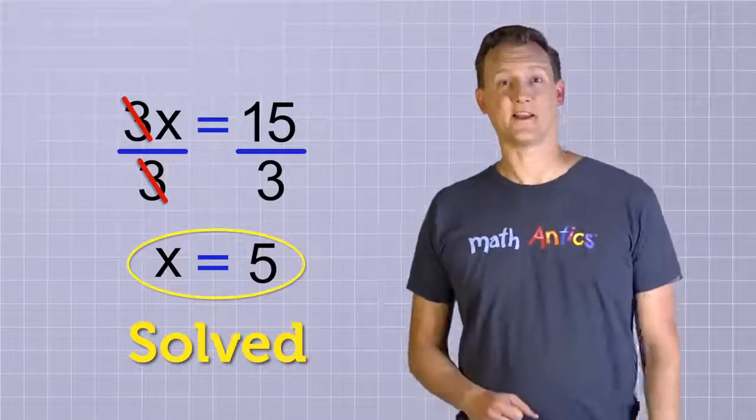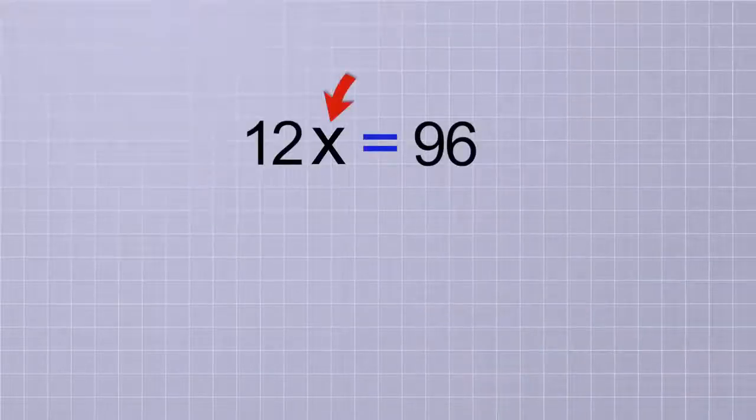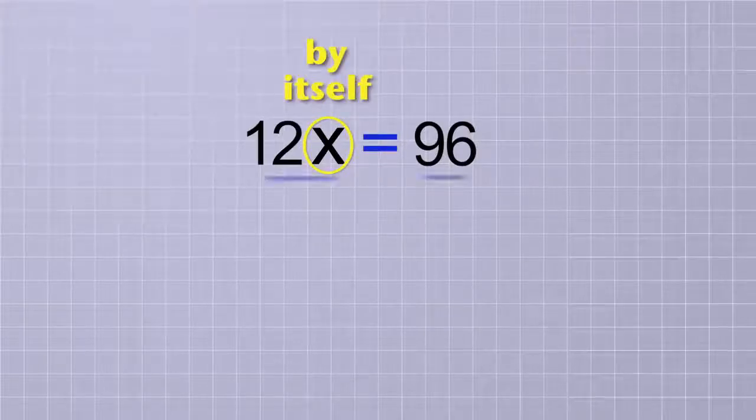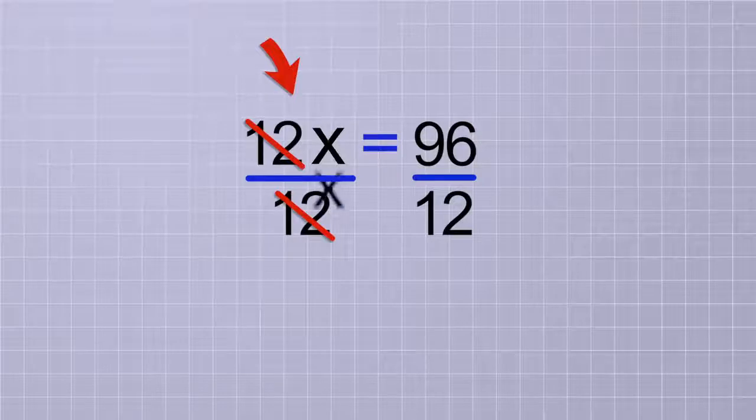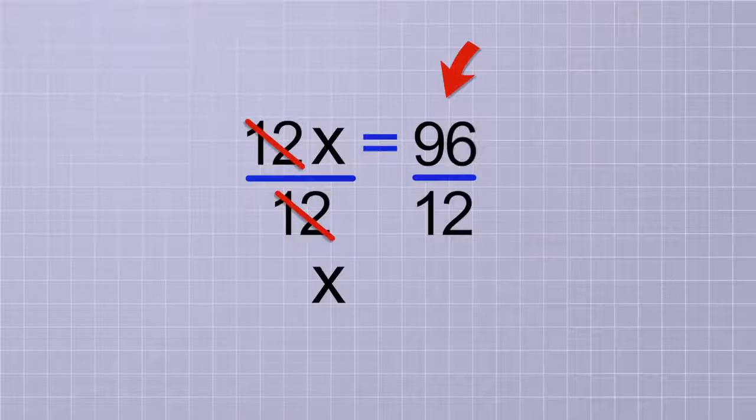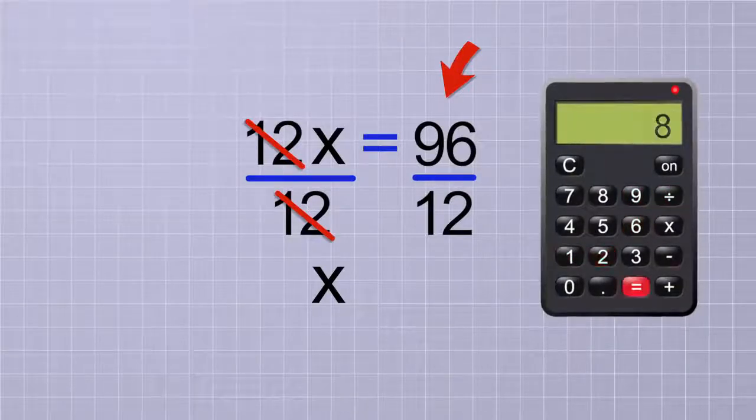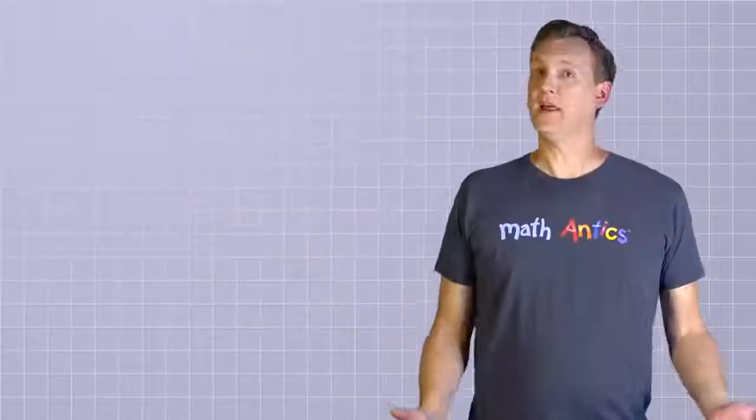Let's try another one just like that: 12x equals 96. In this problem, the unknown is being multiplied by 12. So to get the x all by itself, we're going to need to divide both sides of the equation by 12. On the first side, the 12 on top and the 12 on bottom cancel out, leaving just x on that side. And on the other side, we need to divide 96 by 12. You might be able to do that by memory, but if not, you can use a calculator to divide. 96 divided by 12 is 8. So in this problem, x equals 8. That's pretty easy, isn't it?